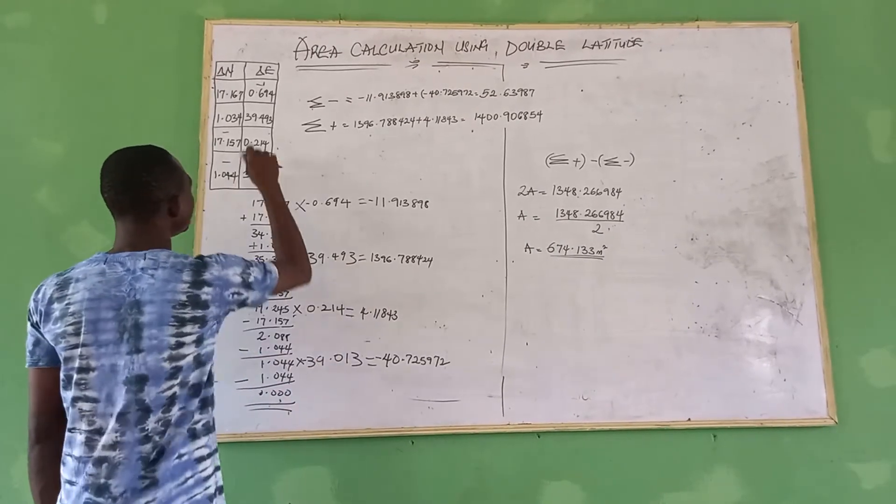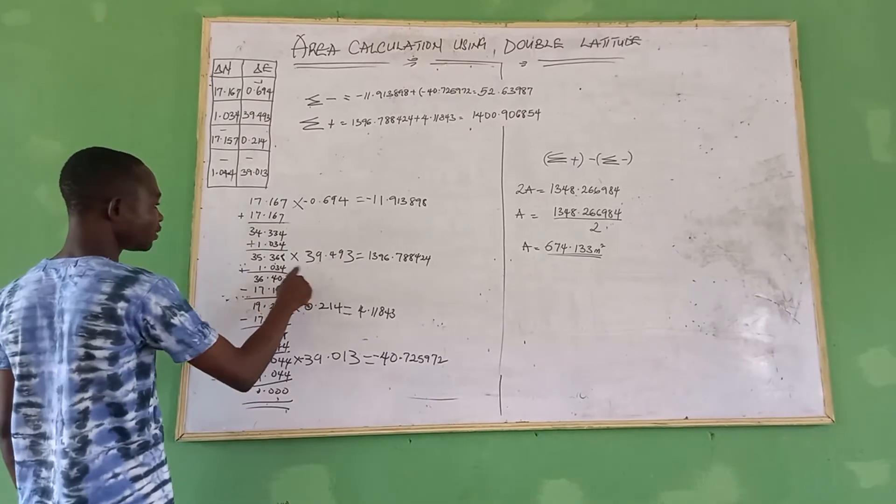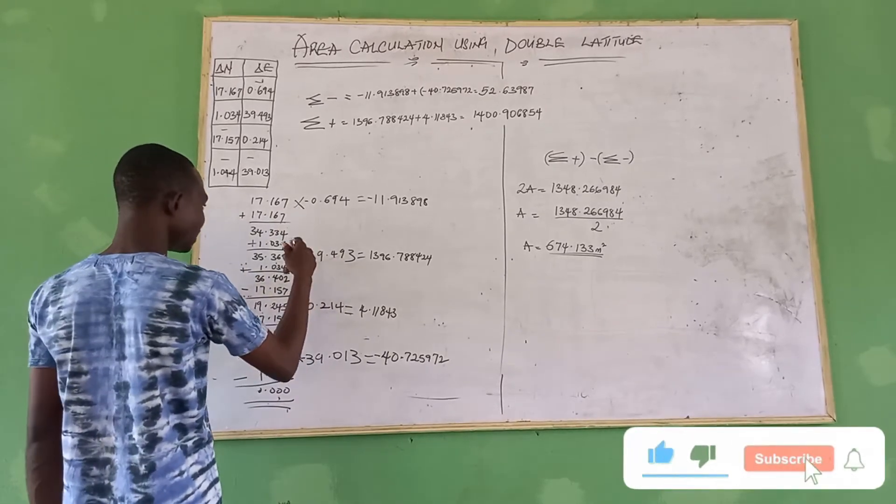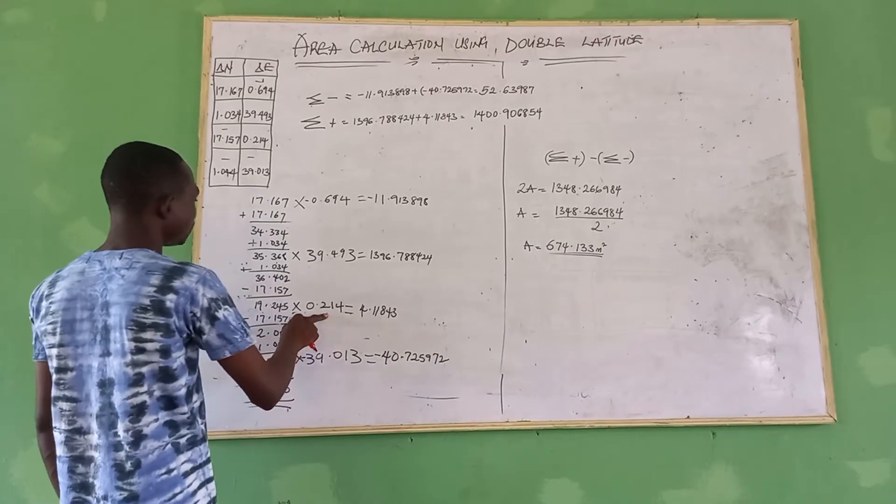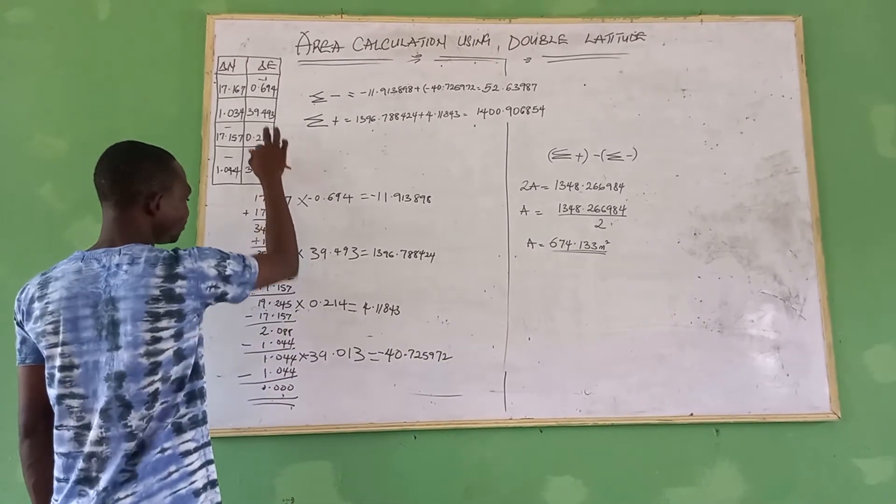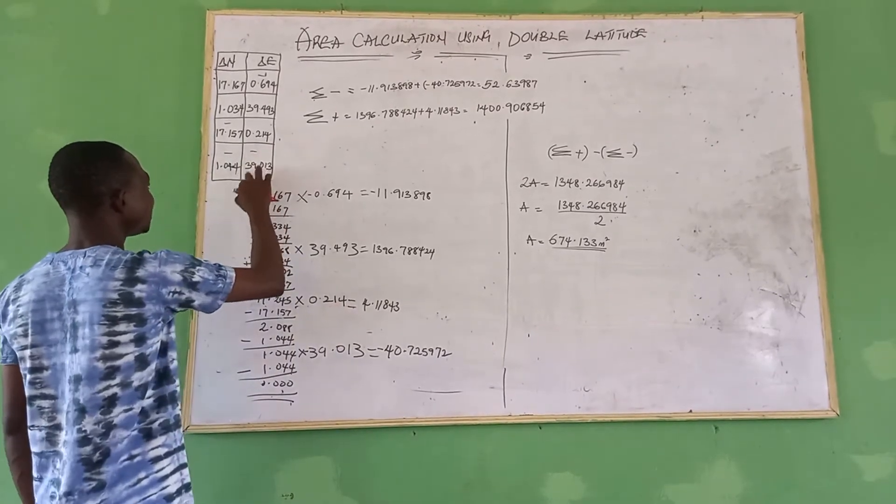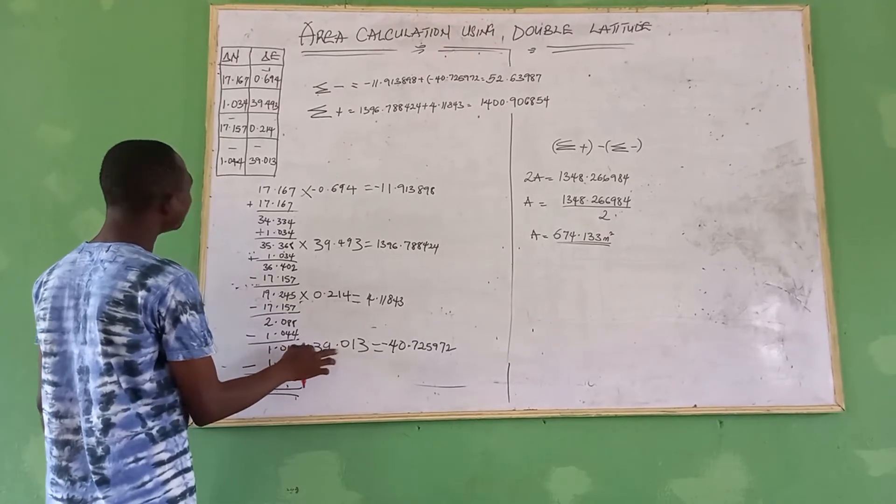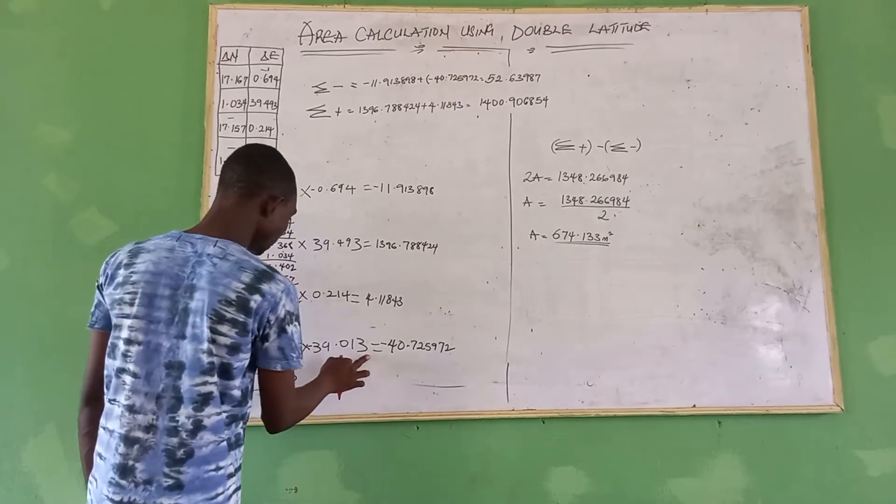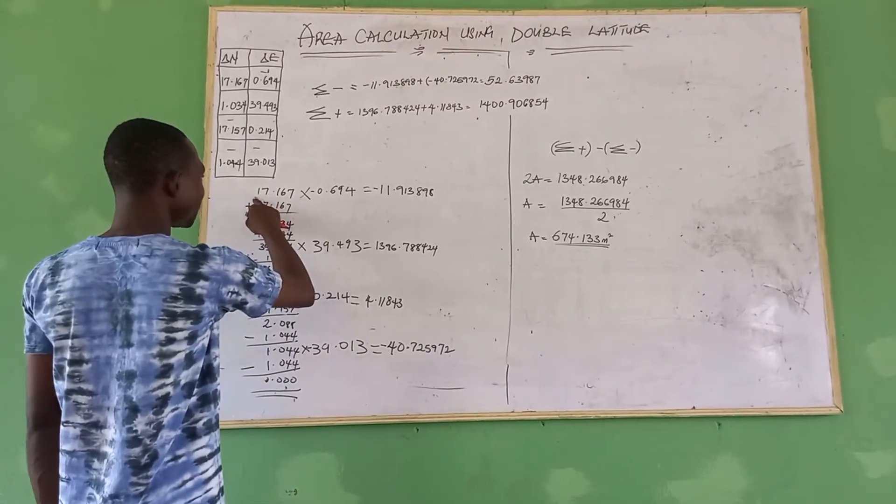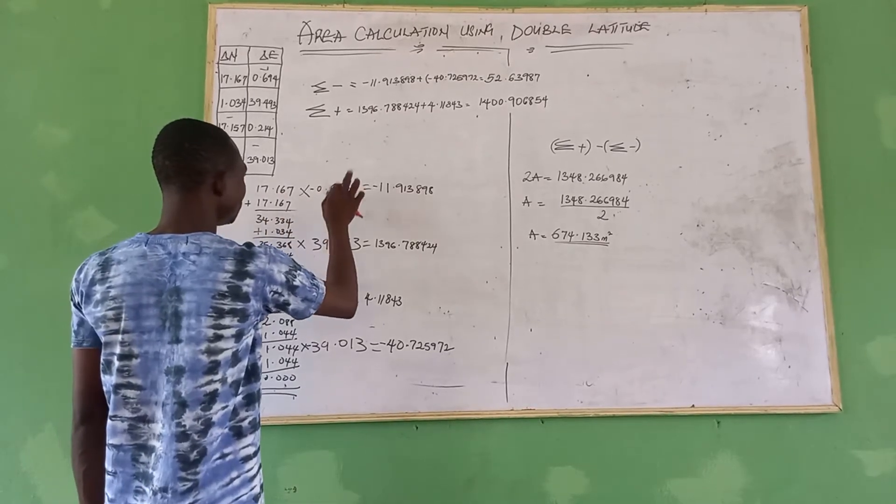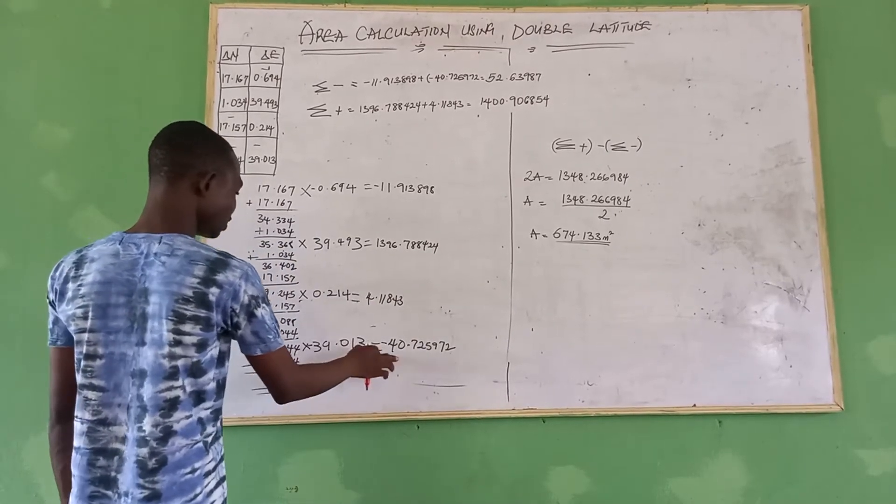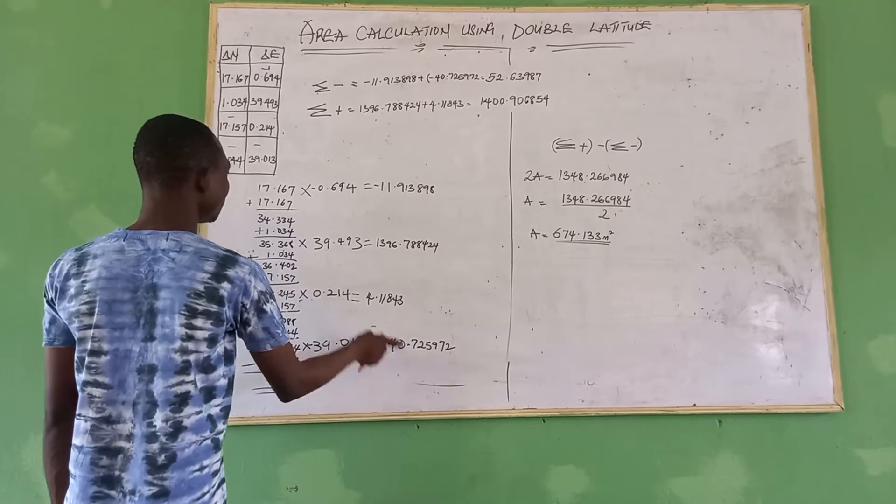It's going to give your next data listing, which is 39.493. One, two, three, four, five. So what you do is you subtract.